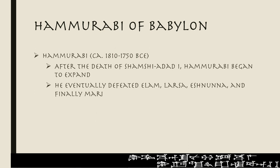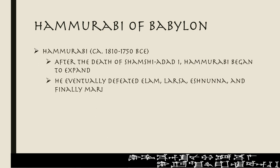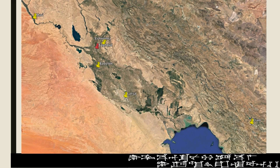When we come to Hammurabi, circa 1810 to 1750, following the death of Shamshi Adad in 1776, Hammurabi began this consistent expansion. He eventually defeats Elam and Larsa to the south, then Ashnunna, and finally the city of Mari.